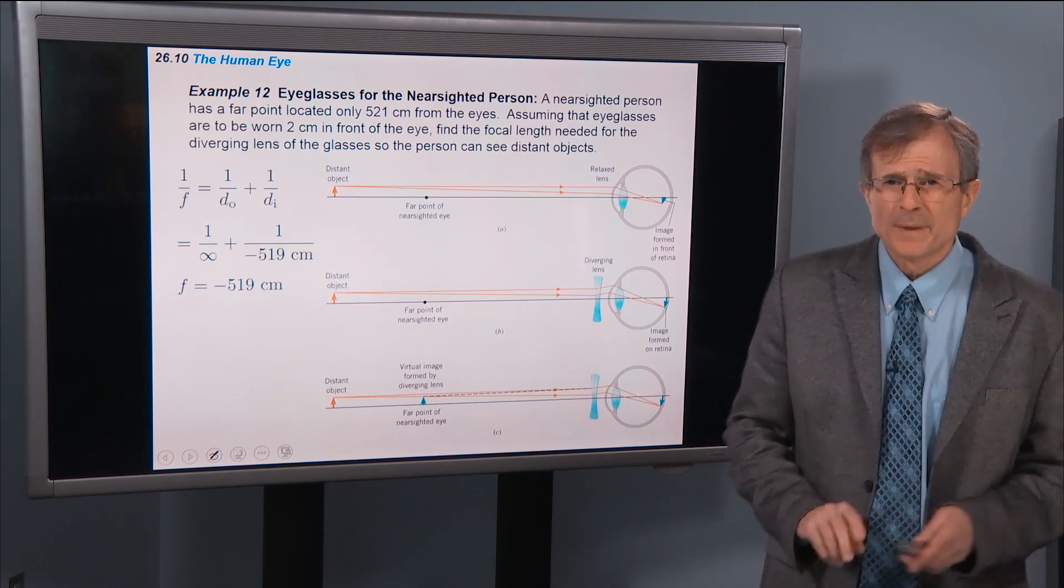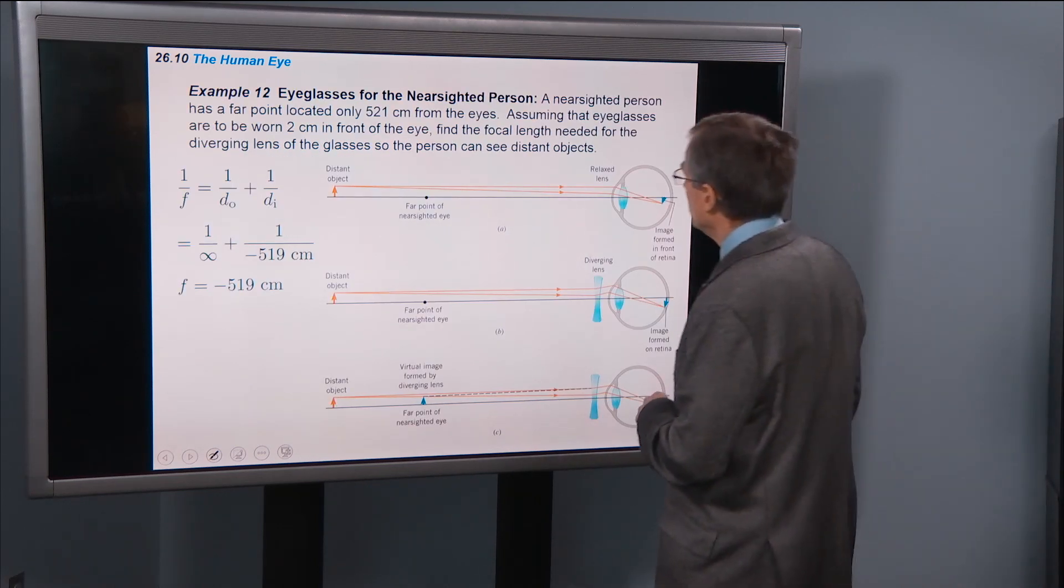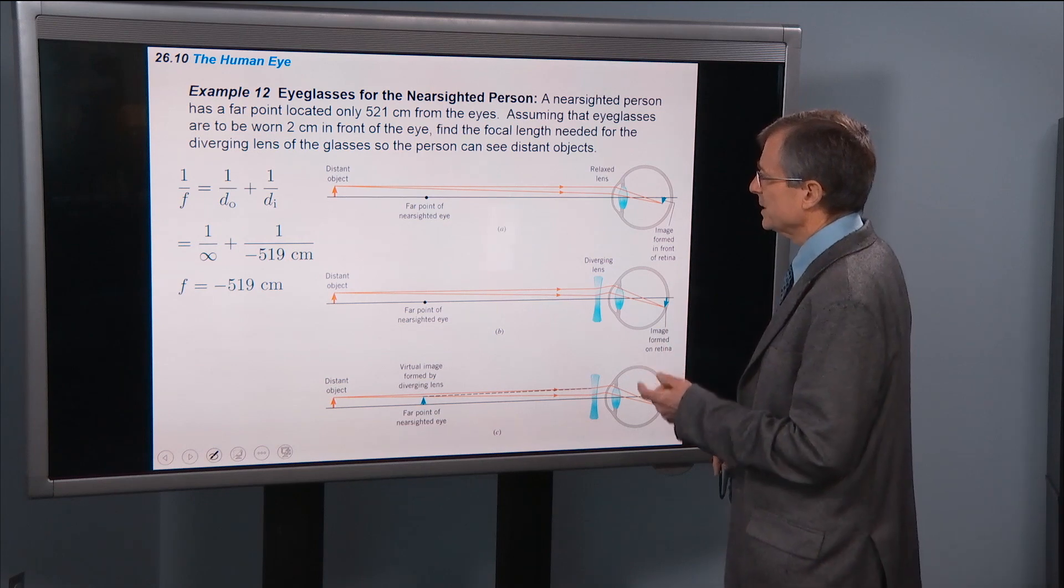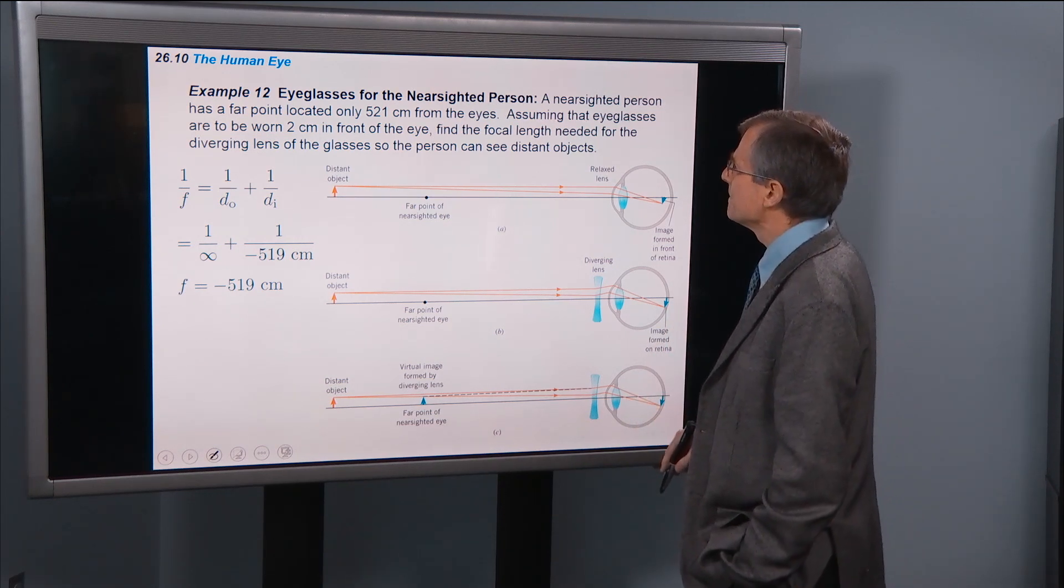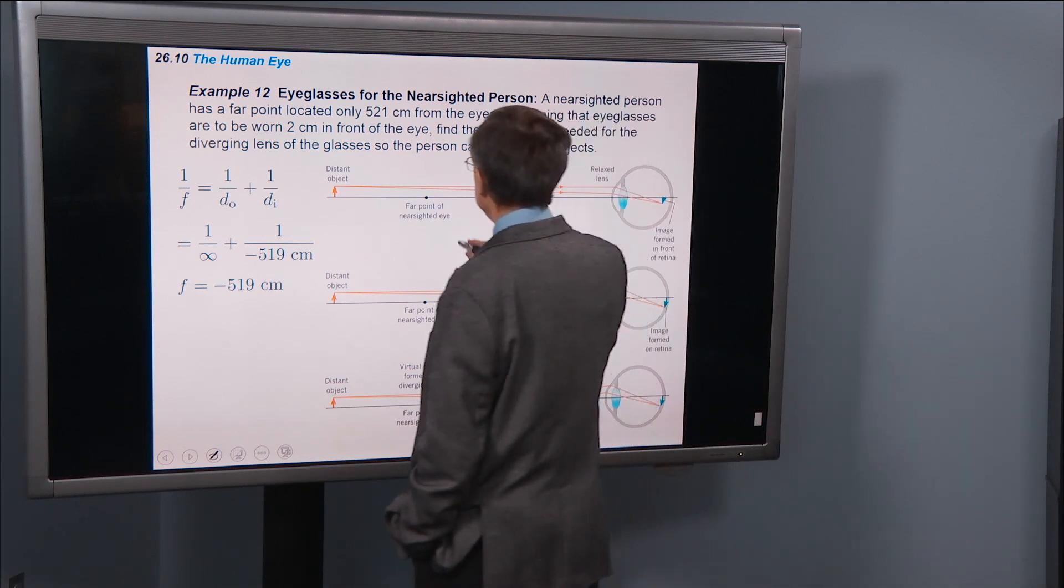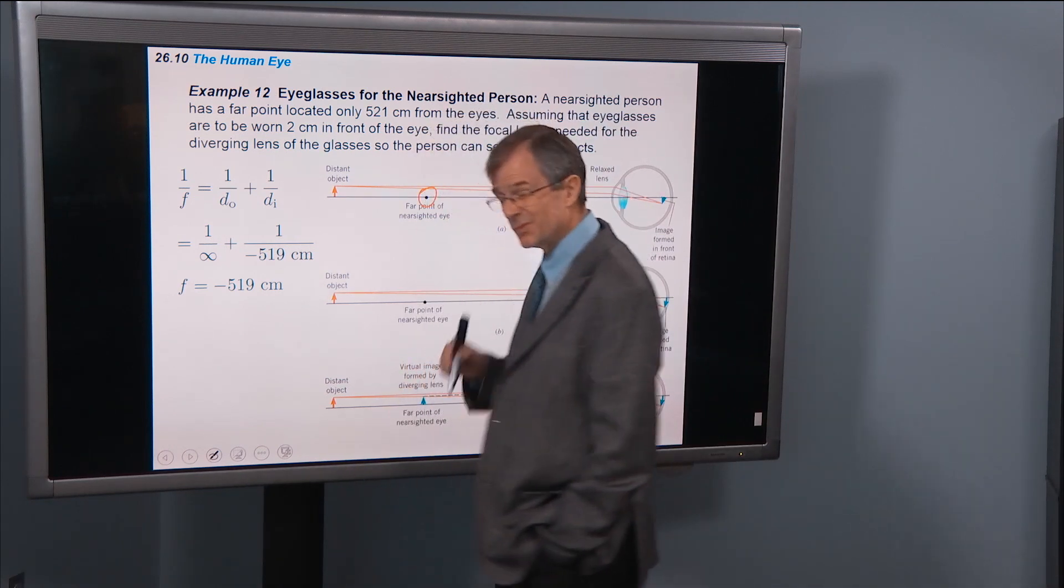A couple of examples. Eyeglasses for nearsighted person. A nearsighted person has a far point located only 521 centimeters from the eyes.